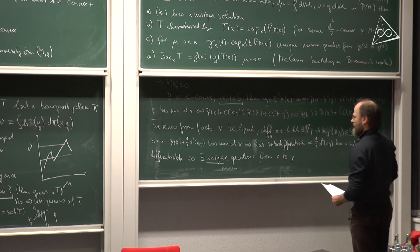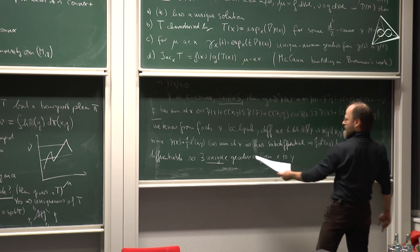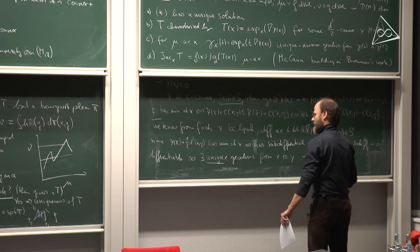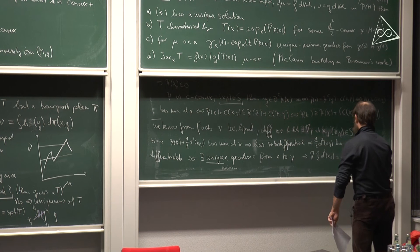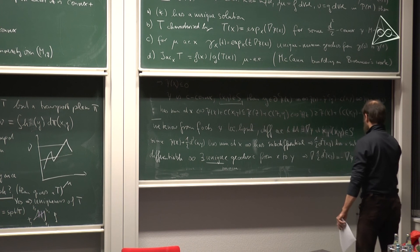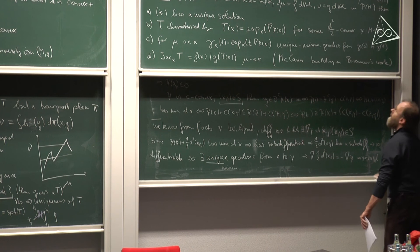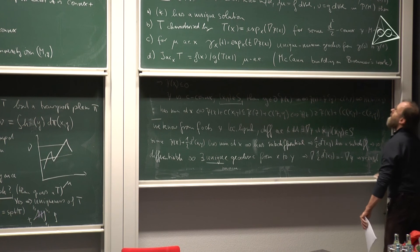Since the function z ↦ ψ(z) + ½d²(z,y) is differentiable and has a minimum at x, the gradient of ½d²(x,·) at x equals minus the gradient of ψ. By the formulas from the beginning, this tells us precisely that y = exp_x(∇ψ(x)) — i.e., y is uniquely determined by x. So for μ-almost every x, there is just a single y in the c-subdifferential.